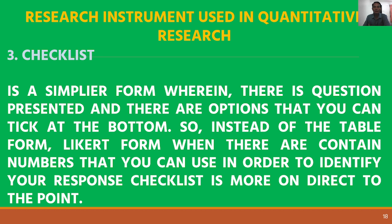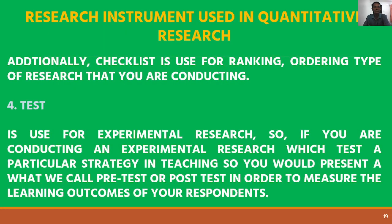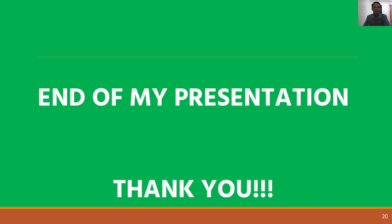A checklist is a simpler form wherein a question is presented along with options to pick. Instead of a table format with numerical values, a checklist is more direct to the point. Additionally, checklists are used for ranking or ordering types of research. A test is used for experimental research — for example, if you are testing a particular teaching strategy, you would present a pre-test or post-test to measure the learning outcomes of your students. That concludes the presentation, thank you everyone.